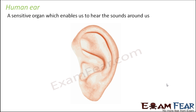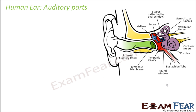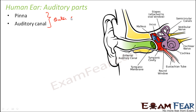Here we are going to talk about not only the structure but also the function of each and every part of the human ear. The ear is broadly divided into three parts: the outer ear, the middle ear, and the inner ear. The pinna is the outermost external part, and together with the auditory canal, it forms the outer ear.